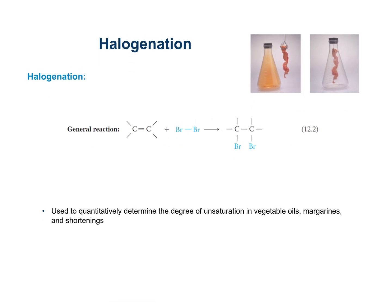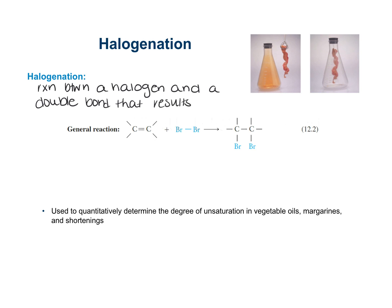Halogenation is one of the most common addition reactions we see. This is a reaction between a halogen and a double bond that results in a carbon-carbon single bond, with the halogens attached to the carbons where the double bond was. The products here are referred to as haloalkanes or alkyl halides.